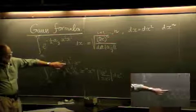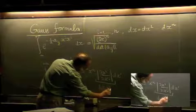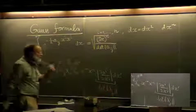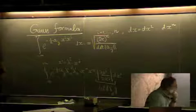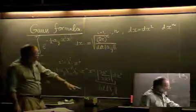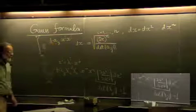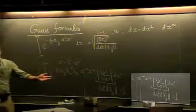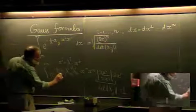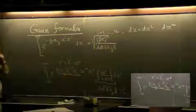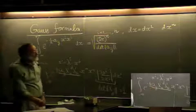This Jacobian is just the determinant of the matrix λ^i_j. We now choose this matrix to be orthogonal. For an orthogonal matrix, this determinant equals one. We can choose the orthogonal matrix in such a way that it puts the tensor a_ij into diagonal form.